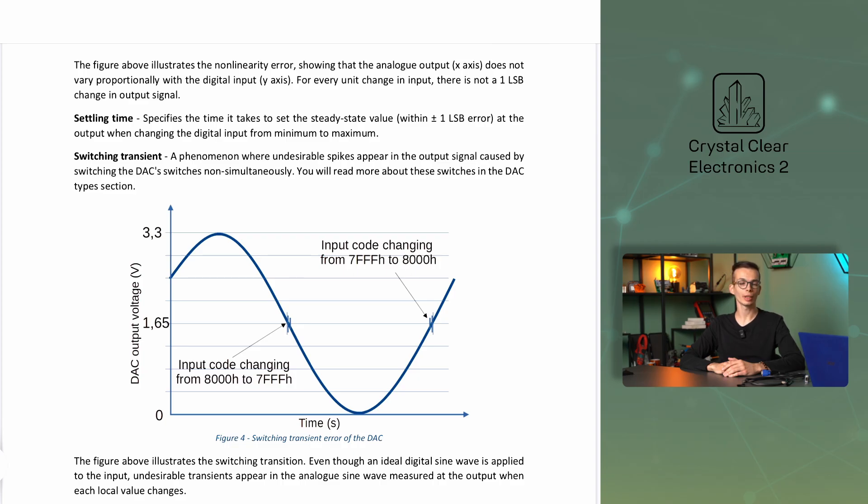This figure illustrates the switching transient. Even though an ideal digital sine wave is applied to the input, undesirable transients appear in the analog sine wave measured at the output when several values change simultaneously. The next feature is the signal-to-noise ratio, or SNR for short. The signal-to-noise ratio is the ratio of the useful signal at the output to the noise. Since different physical magnitudes of signal and noise generally vary by several orders of magnitude, this ratio is determined on a logarithmic scale measured in decibels.